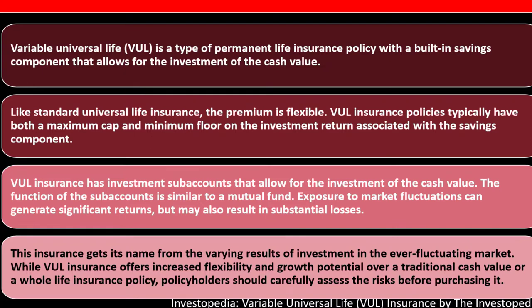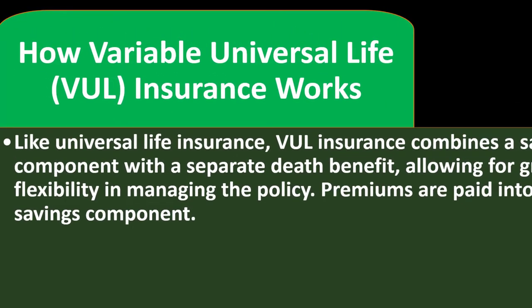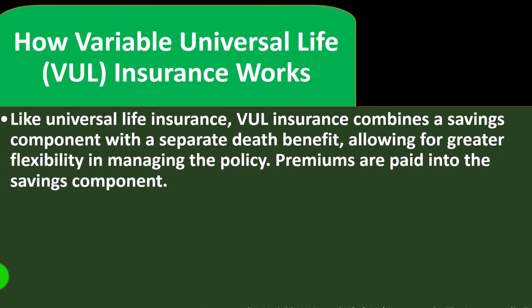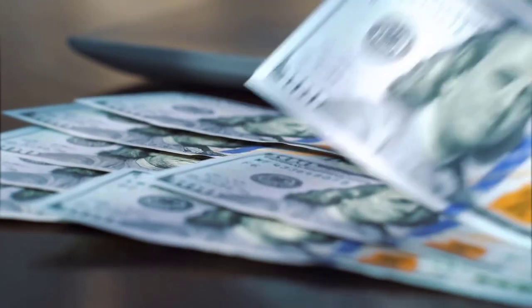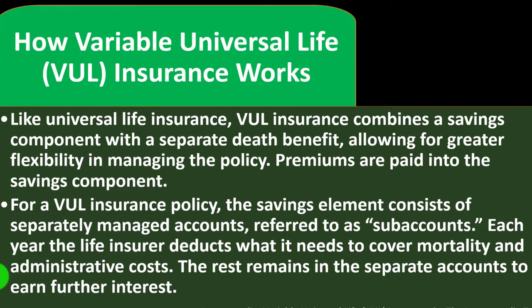How Variable Universal Life (VUL) insurance works: like universal life insurance, VUL combines a savings component with a separate death benefit, allowing for greater flexibility in managing the policy. Premiums are paid into the savings component. For VUL, the savings element consists of separately managed accounts referred to as 'sub-accounts.' Each year, the life insurance deducts what it needs to cover mortality and administrative costs; the rest remains in these separate accounts to earn further interest.